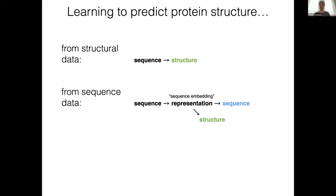The model is trained on the task of taking a sequence as input, forming a representation of it, and then decoding that representation back into the exact same sequence. This can be done with multiple sequence alignments also. Now, this representation, somewhat surprisingly but not completely unexpectedly, contains hidden inside those numbers a lot of information about the structure. So you can build a model that uses that representation as input and decodes from it any kind of structural information you might want, effectively doing an indirect prediction about structure starting from a sequence embedding. This has been shown to work very well in many cases.